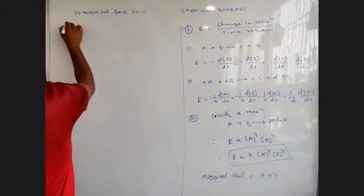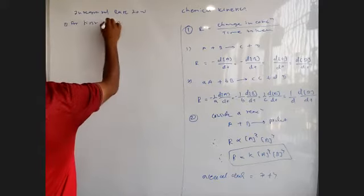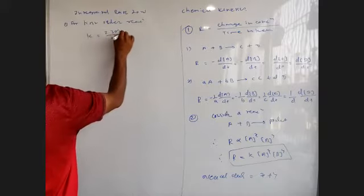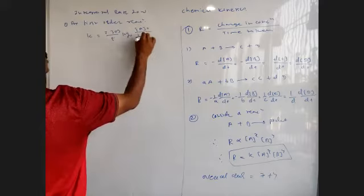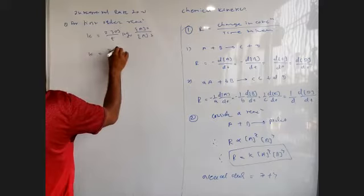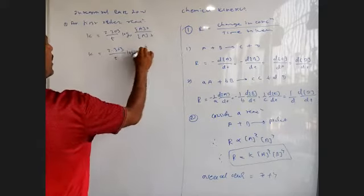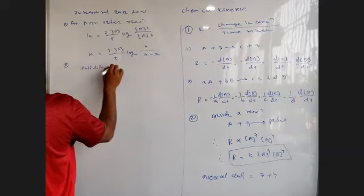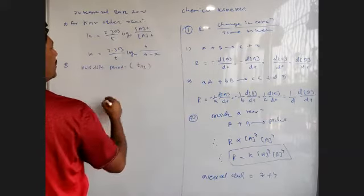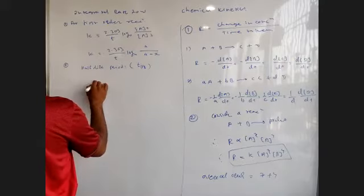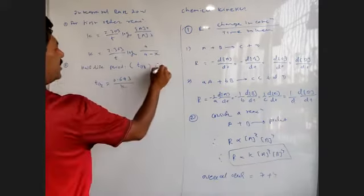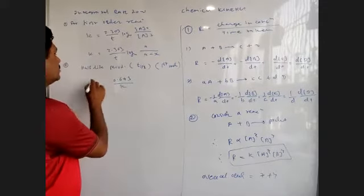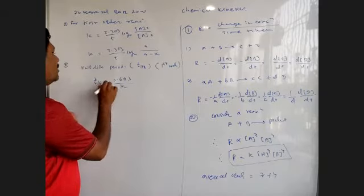The integrated rate law for first-order reaction is: k = 2.303/t × log(A₀/Aₜ), which is equal to 2.303/t × log(A/(A−x)). The half-life period, t½, is equal to 0.693/k. This is again for the first-order reaction.